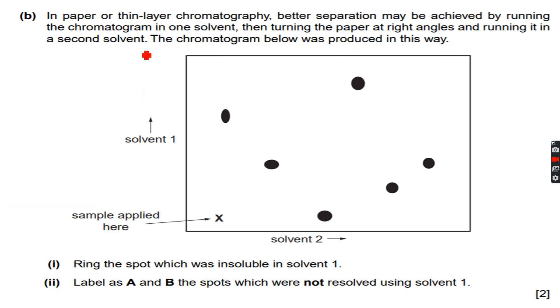In paper or thin layer chromatography, better separation may be achieved by running the chromatogram in one solvent, then turning the paper at right angles and running it in a second solvent. The chromatogram below was produced in this way. First we ran it with solvent 1, and because we must be facing some problems with solvent 1, we ran it again at right angles in solvent 2 after that.